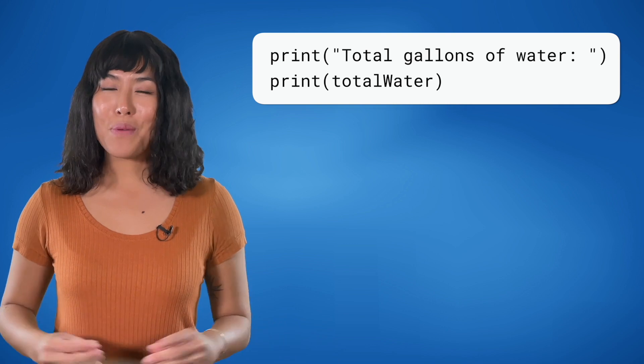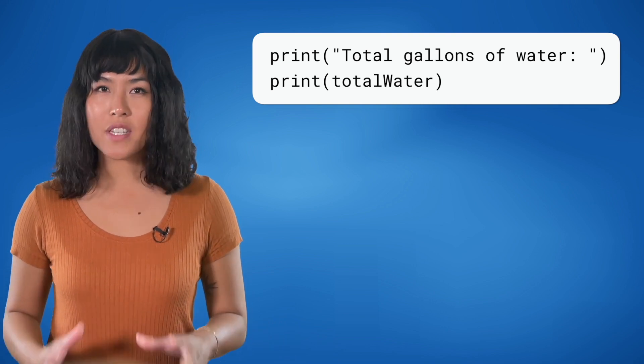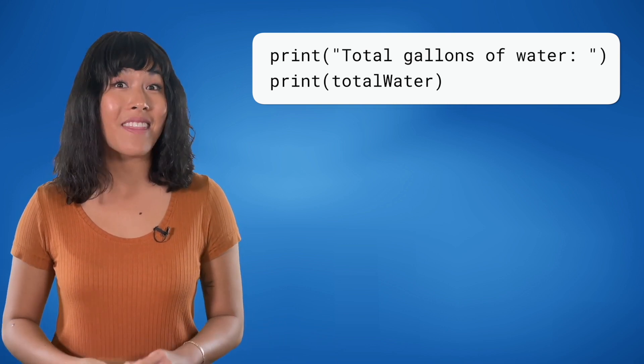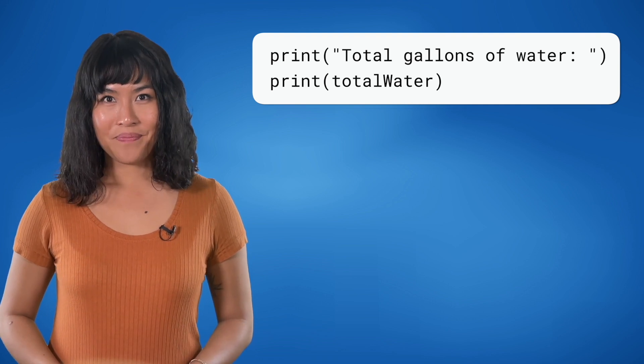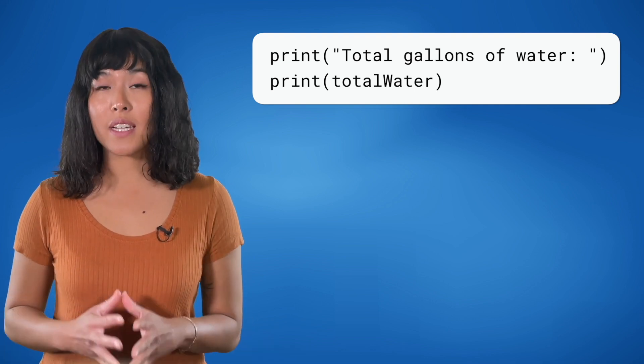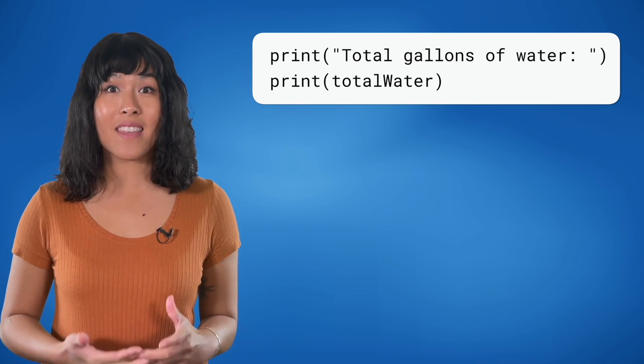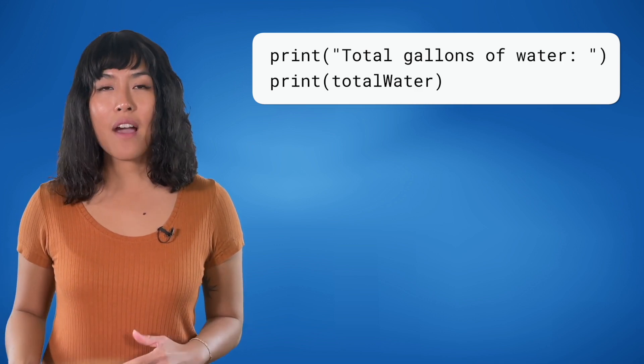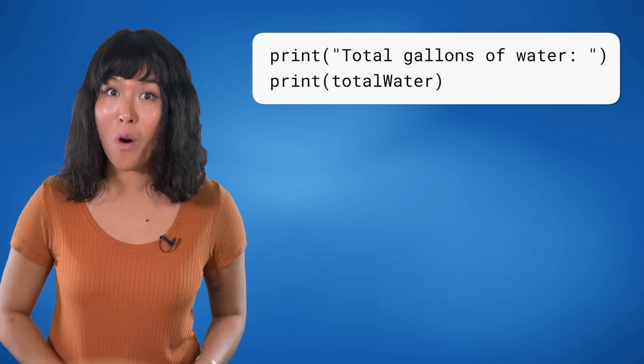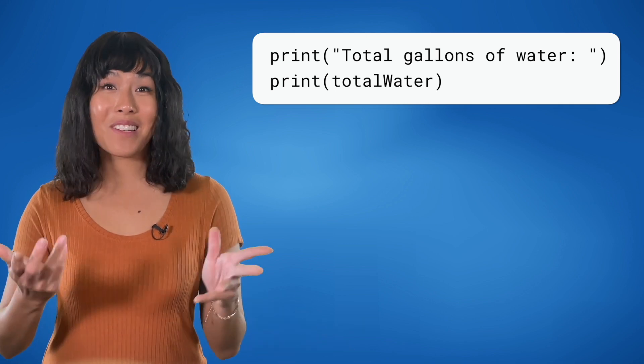Finally, we print out total water, which now contains the sum of all the gallons of water in the containers. How do you think you might use a count variable to determine the average amount of water in the container if we have the total in total water? Try this in your guided notes.